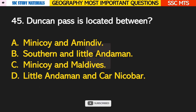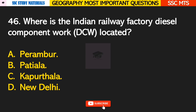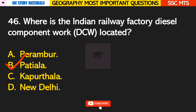Question number 45: Duncan Pass is located between? Answer B — it is located between South Andaman and Little Andaman. Question number 46: where is the Indian Railway Diesel Component Works (DCW) located? Answer B — it is located in Patiala.